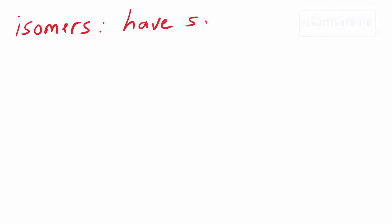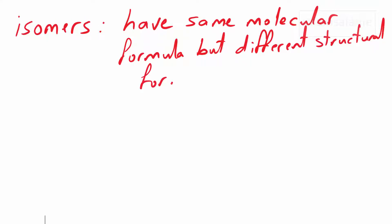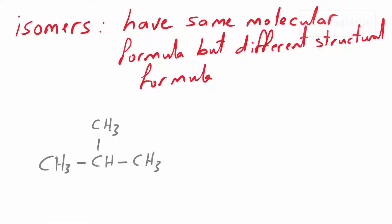Before starting the isomers of C6H14, let me remind you of the definition of isomers. Isomers have the same molecular formula but different structural formula, which means they should have the same type of atoms and same number of atoms, but a different structure — like these two structures shown here.